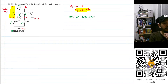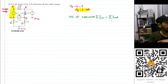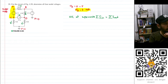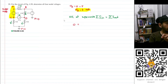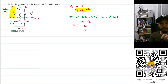We can do KCL at the super node. KCL says the sum of currents going in equals the sum of currents going out. There is no current going into the super node, so all currents are going out. The first current going out is (VA minus VB) divided by 10.